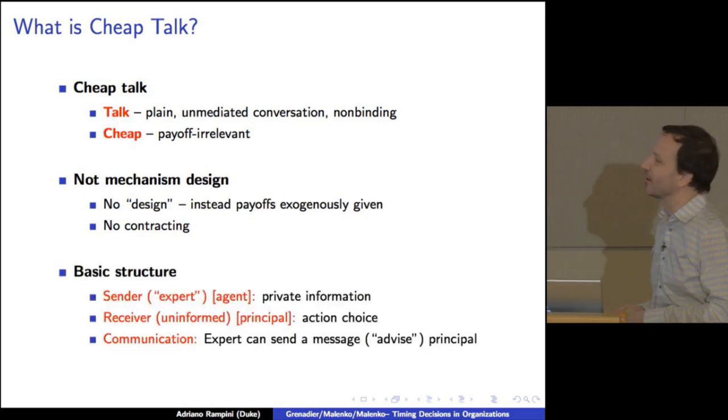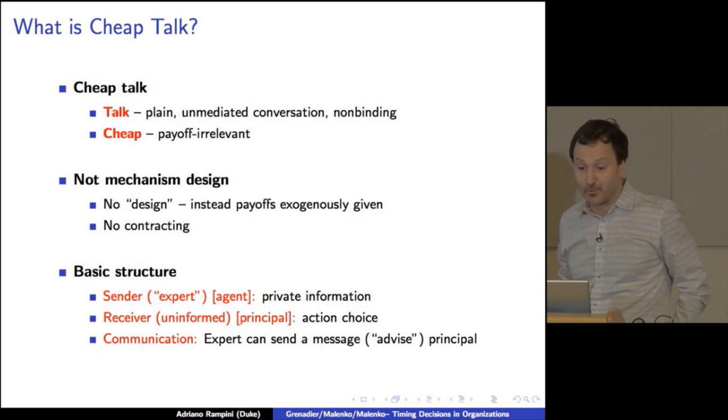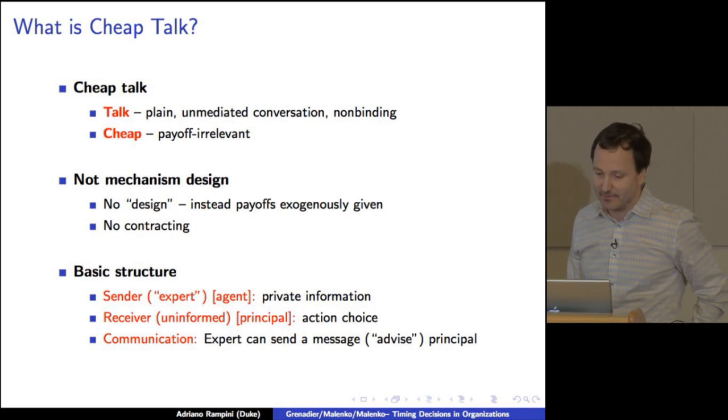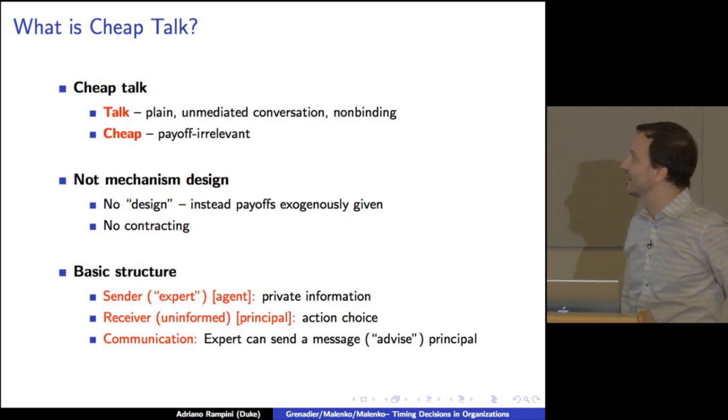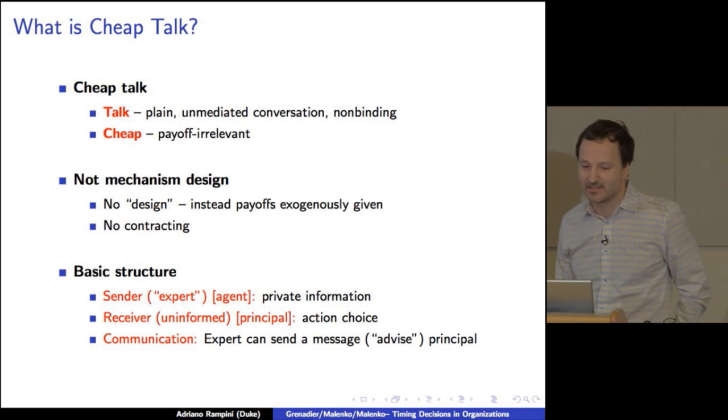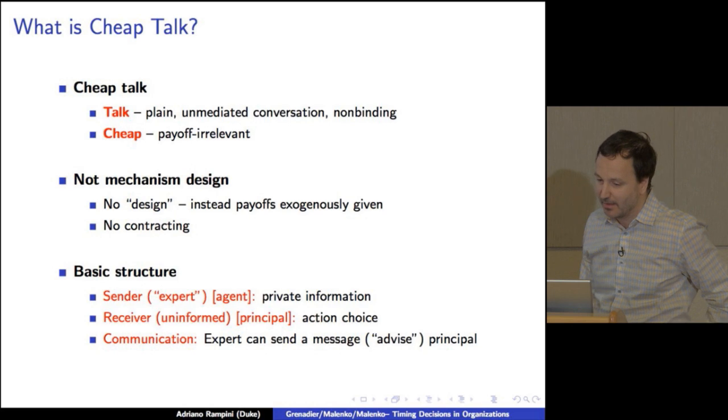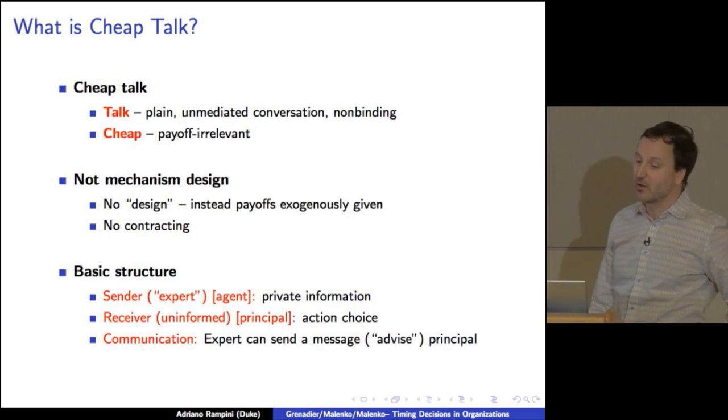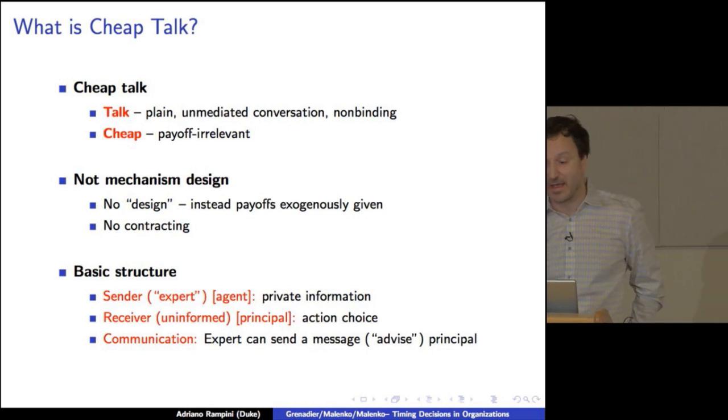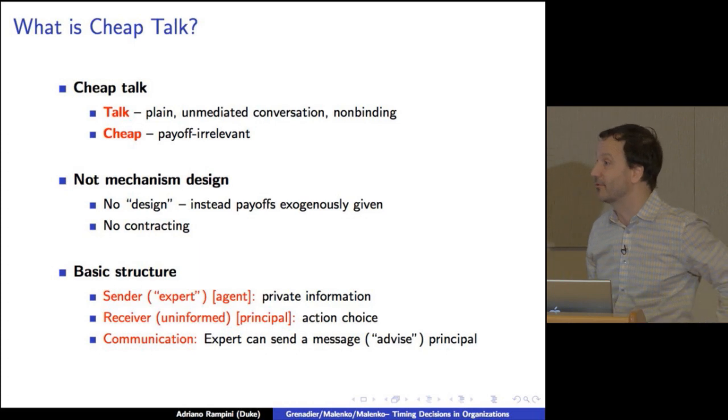And here's the basic structure. Basic structure goes like this. There's a sender, an expert, an agent, if you like, who knows something. So he has private information. There is a receiver who doesn't know anything, is uninformed, the principal, who does something. So he's going to take an action. And essentially, all we can do is communicate. So there's a communication where the expert can send a message to the principal, so give the principal advice.